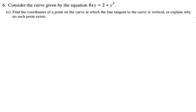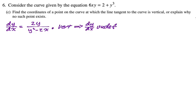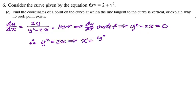Find the coordinates of a point on the curve at which the tangent line is vertical, or explain why no such points exist. A vertical tangent means the derivative is undefined, which means the denominator equals 0. So we need y squared minus 2x equals 0. Solving for x gives x equals y squared over 2.